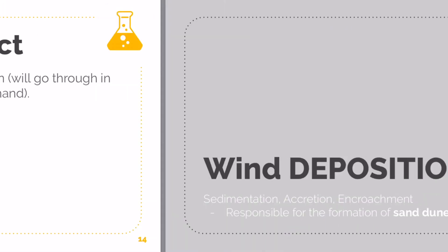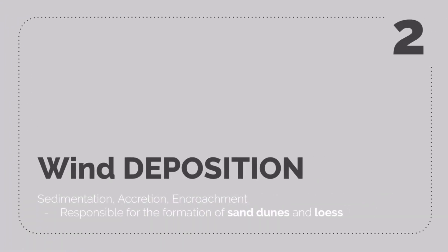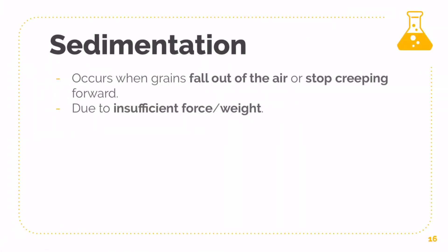Next I move on to wind deposition. Wind deposition is responsible for the formation of sand dunes and loess. When it comes to yardangs, they tend to be more caused by transportation and erosion, whereas things like sand dunes and loess tend to be formed as a result of wind deposition. First, sedimentation is very simple — it is when your grains start to fall out of the air or stop creeping forward. As long as your grains stop moving forward or fall out of suspension, that is the process of sedimentation in terms of deposition.